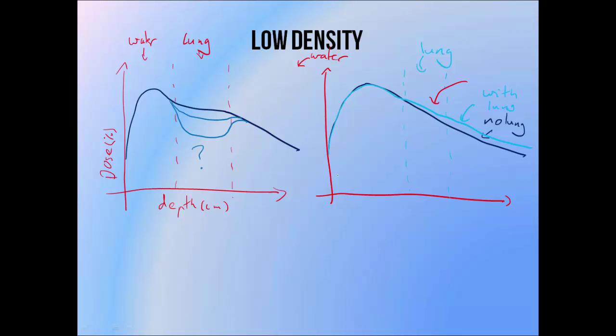This is because there's less attenuation of the beam inside the lung region because it's lower density, so there's more of the beam left on the other side, and as a result quite often you'll also simply see a slight reduction in the dose gradient inside the lung, since the rate of dose drop off is reduced.